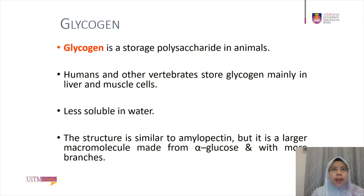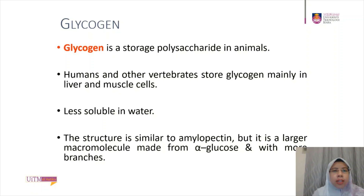Animals store a polysaccharide called glycogen — a polymer of glucose that is like amylopectin but more extensively branched. Vertebrates store glycogen mainly in liver and muscle cells. The process involved is hydrolysis: hydrolysis of glycogen in these cells releases glucose when the demand for sugar increases.